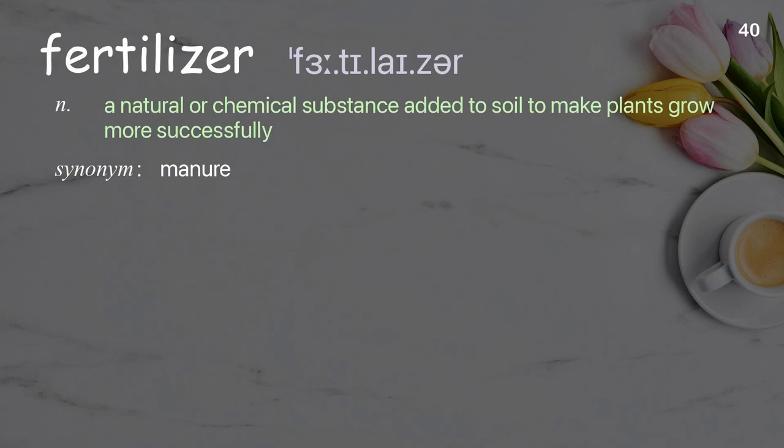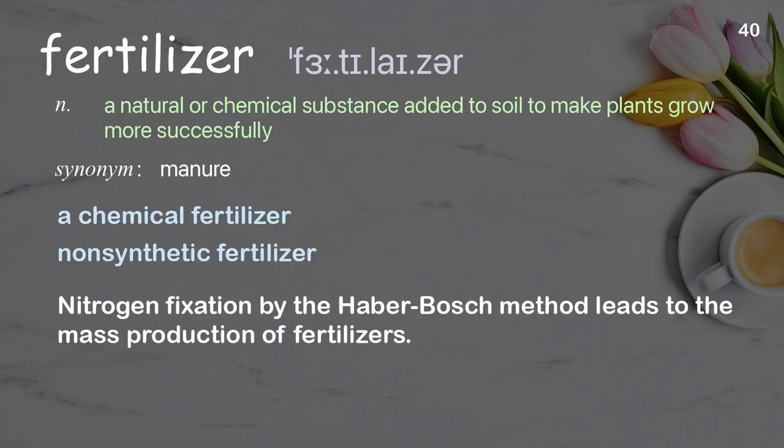Fertilizer: A natural or chemical substance added to soil to make plants grow more successfully. Examples: A chemical fertilizer, non-synthetic fertilizer. Nitrogen fixation by the Haber-Bosch method leads to the mass production of fertilizers.